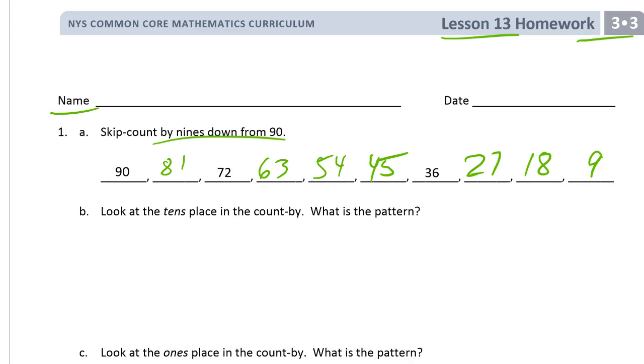Now it says look at the tens place, the tens place in the count by. What is the pattern? And you'll see, look at the tens digits. This is really a zero. So what is the pattern? It might be a little bit better to just say, the tens digit decreases, or you could write goes down by one each time.